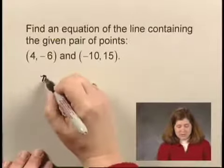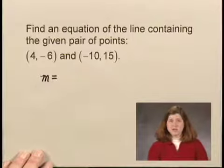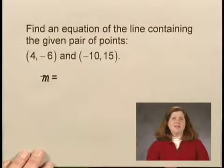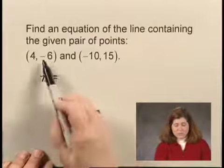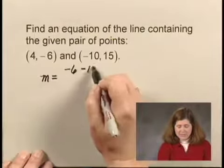The slope is the rise over the run, or the change in y over change in x. The change in y we find by subtracting the y coordinates: -6 minus 15.